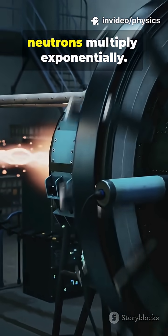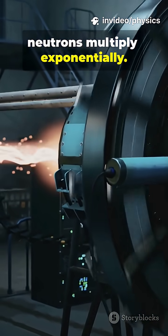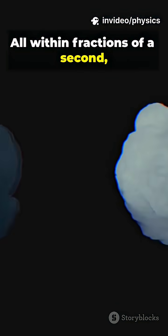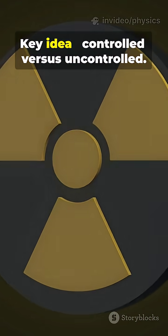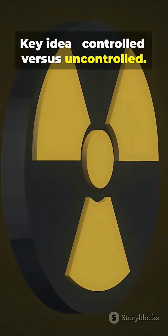In bombs, it's uncontrolled. Neutrons multiply exponentially, all within fractions of a second, releasing massive energy. Key idea: controlled versus uncontrolled.